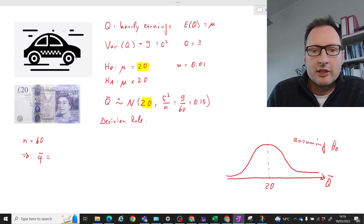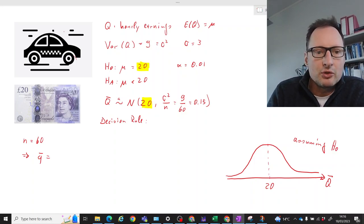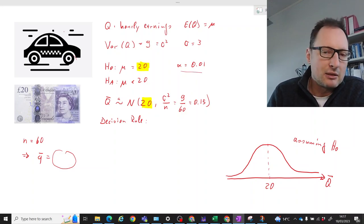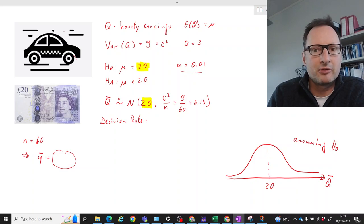So the question is now what type of values for that sample mean would make us reject the null hypothesis. Well when we think about p values, if the p value is smaller than one percent then we would reject the null hypothesis.